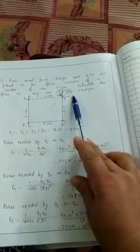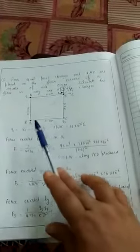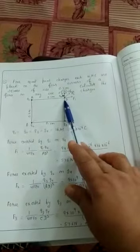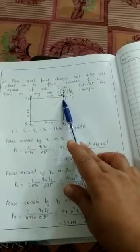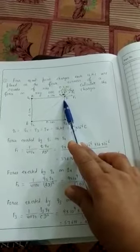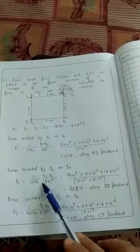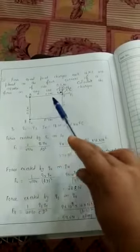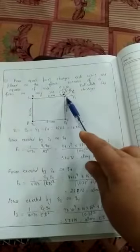Similarly, this charge q2 will exert some force on q4. Let that force be F2. By Coulomb's law, this force can be written as 1/(4πε₀) × q2q4/BD².